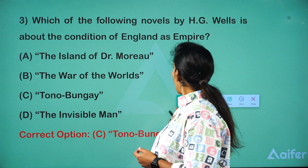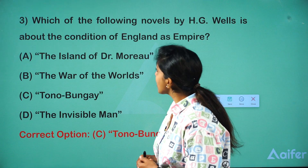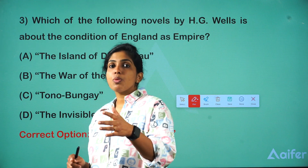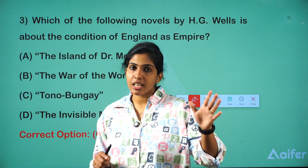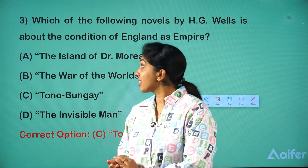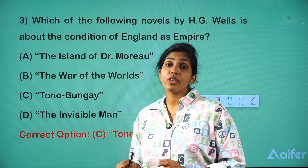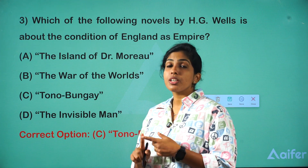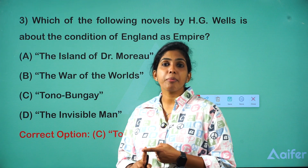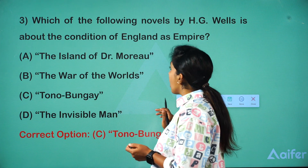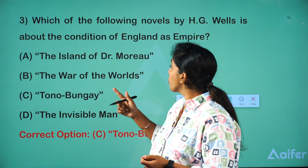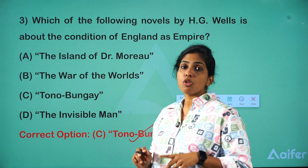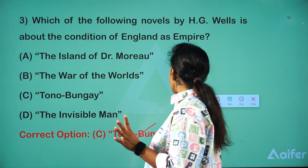Coming to the third question: Which of the following novels by H.G. Wells is about the condition of England as empire? H.G. Wells is known for scientific fiction. The works given here are The Island of Dr. Moreau, The War of the Worlds, Tono-Bungay, and The Invisible Man. The right answer is Tono-Bungay, which discusses the condition of England.